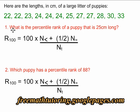And the first question asks, what is the percentile rank of a puppy that is 25 centimeters long? We have a formula with four variables.